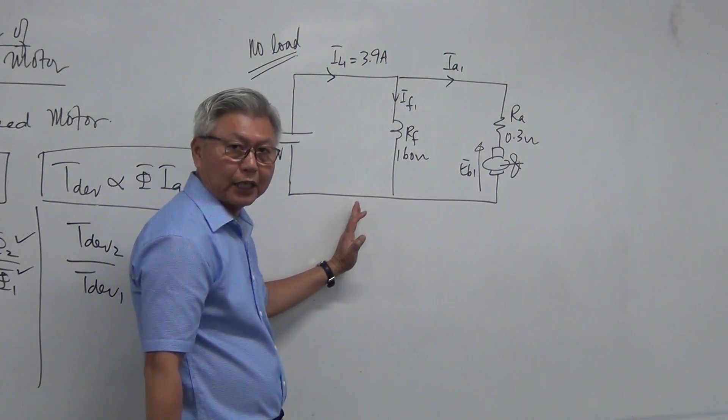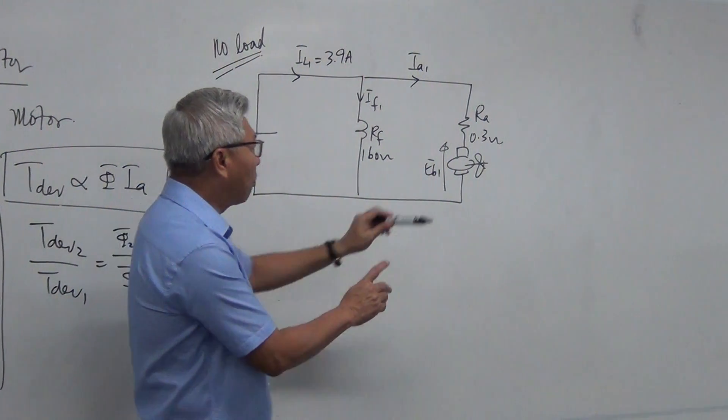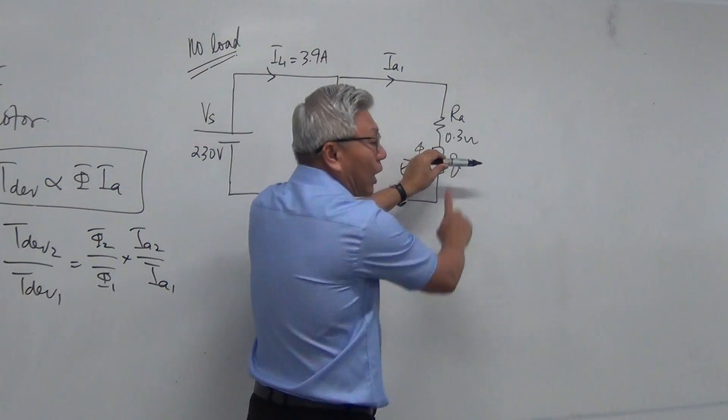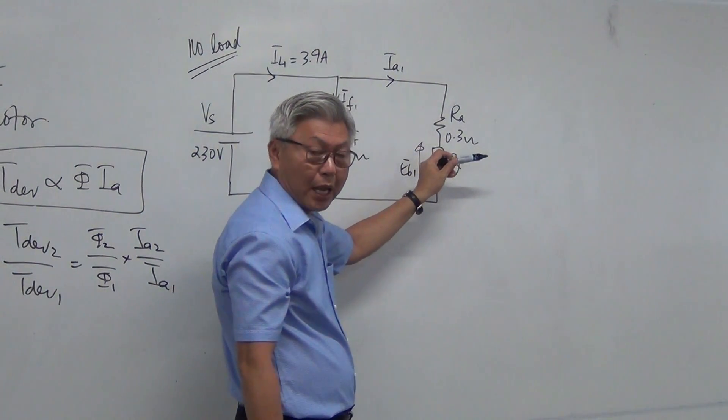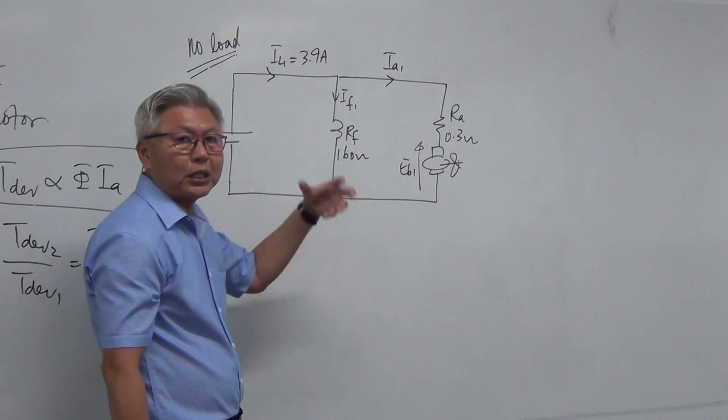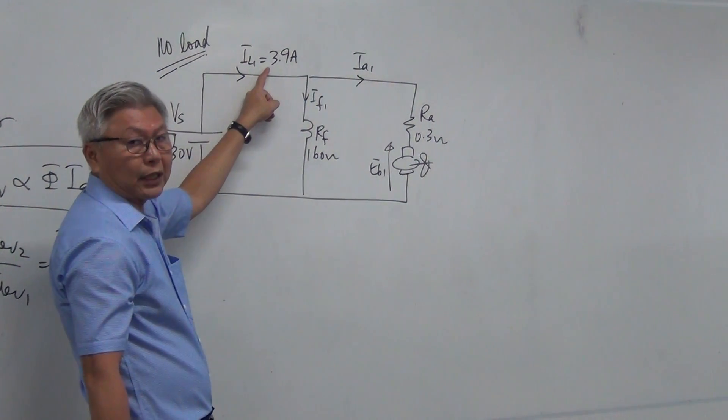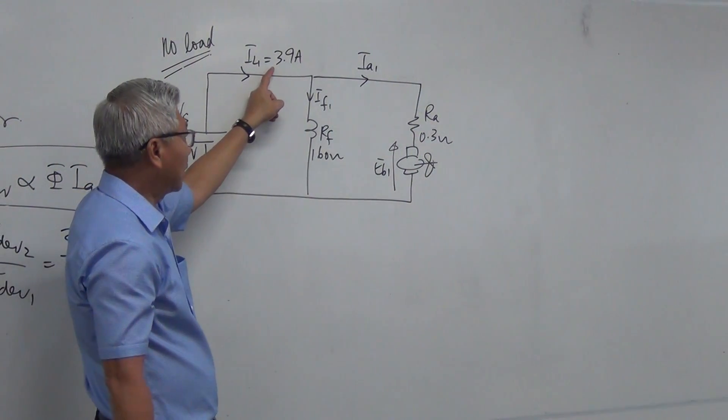I have a shunt motor circuit here, and this motor is operated on no-load. Basically when you say operated on no-load means that there is nothing attached to the shaft of the motor, and it is free-running. And because it is not doing a lot of useful work, so the line current drawn is not much, 3.9 ampere.